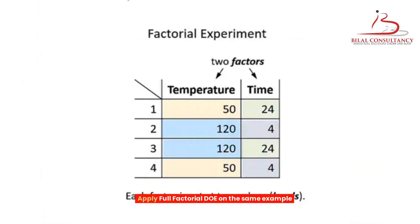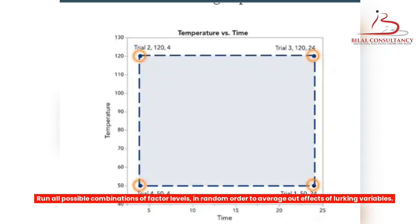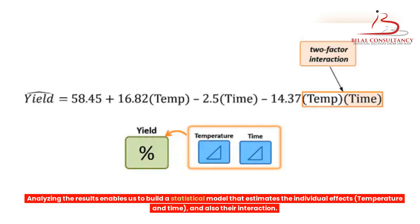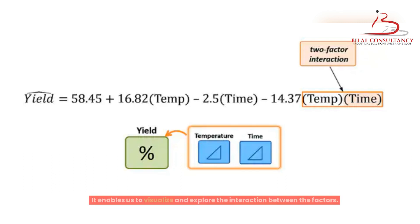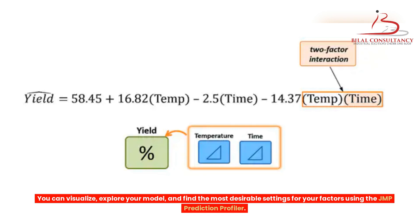Applying full factorial DOE to the same example: experiment with two factors, each at two values. These four trials form the corners of the design space. Run all possible combinations of factor levels in random order to average out effects of lurking variables. Optionally, replicate the entire design by running each treatment twice to find experimental error. Analyzing the results enables us to build a statistical model estimating individual effects — temperature and time — and their interaction. It enables us to visualize and explore the interaction between factors using the JMP prediction profiler.